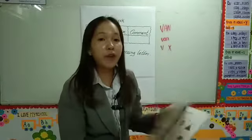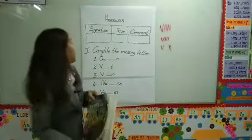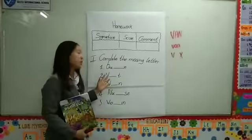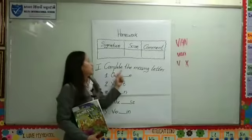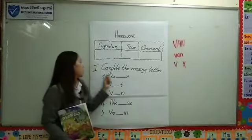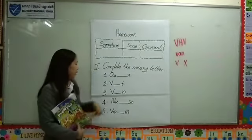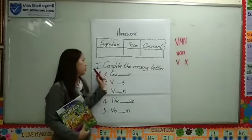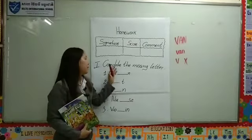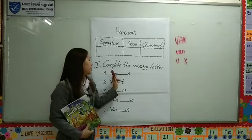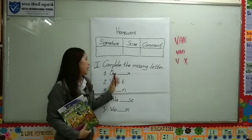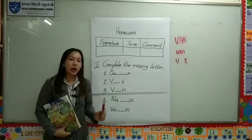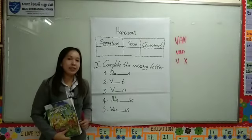So today teacher has one homework for all of you. Please look all together — here is the homework for today that you need to do. Complete the missing letter. Complete the missing letter. So we have five words — you need to guess what each word is, and you need to find the letter to complete each word. Make sure all these words we already studied today. Teacher hopes you try hard at home. Okay, thank you.